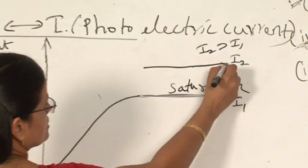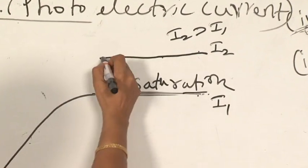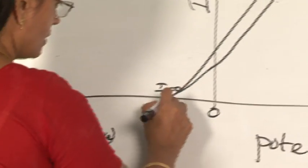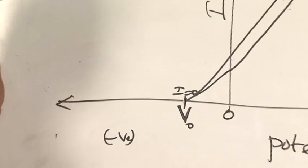When the intensity is increased, the saturation current will be more and the shape of the graph will be somewhat like this. We observe that the stopping potential will remain the same.